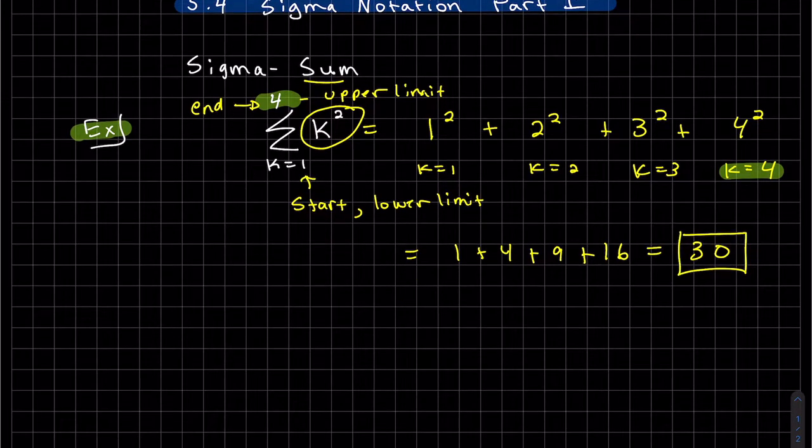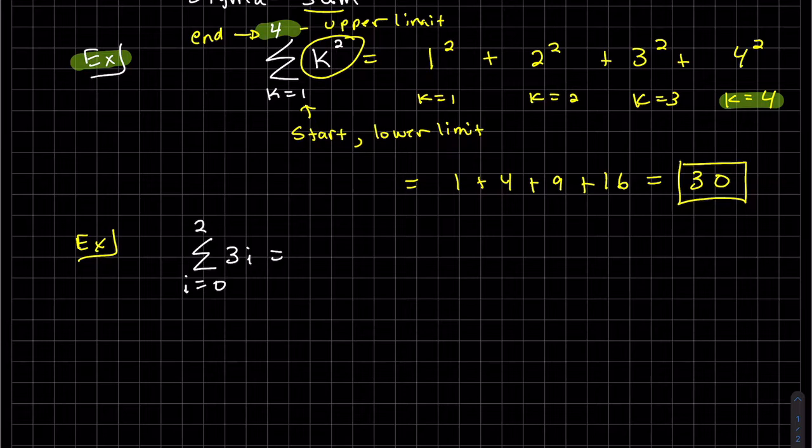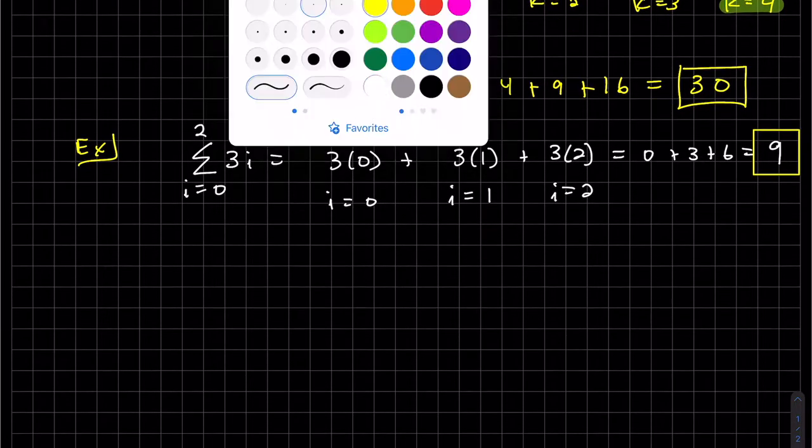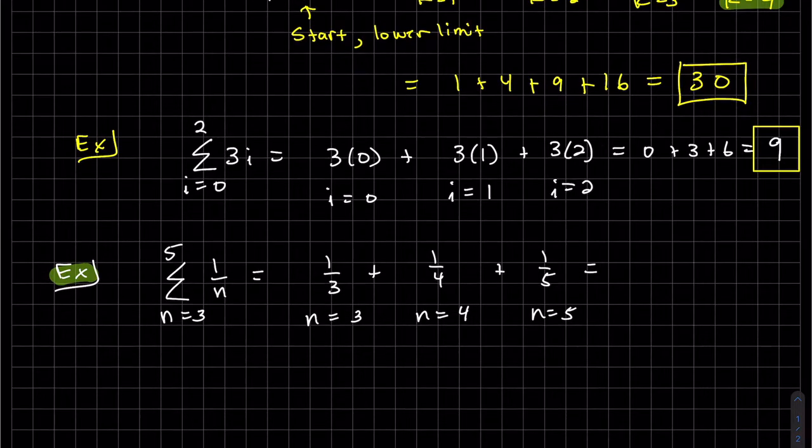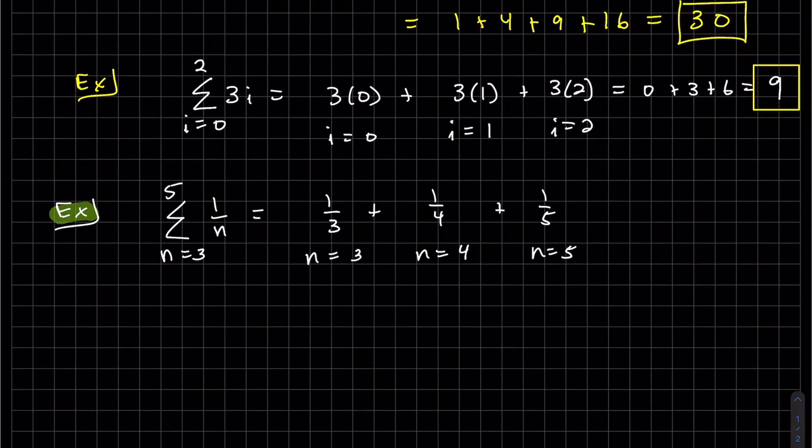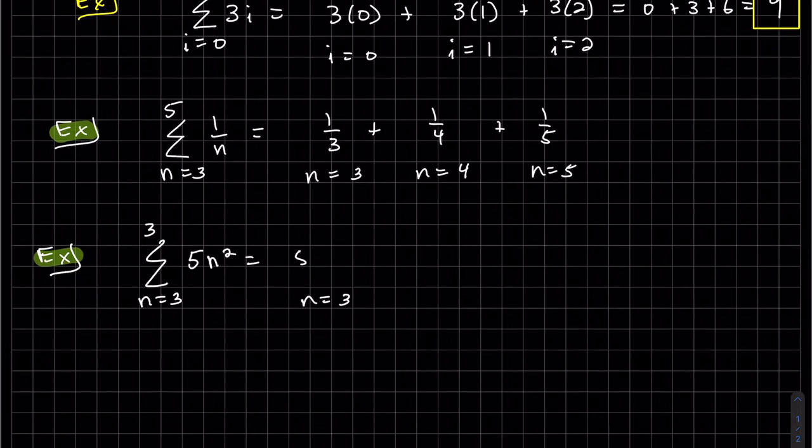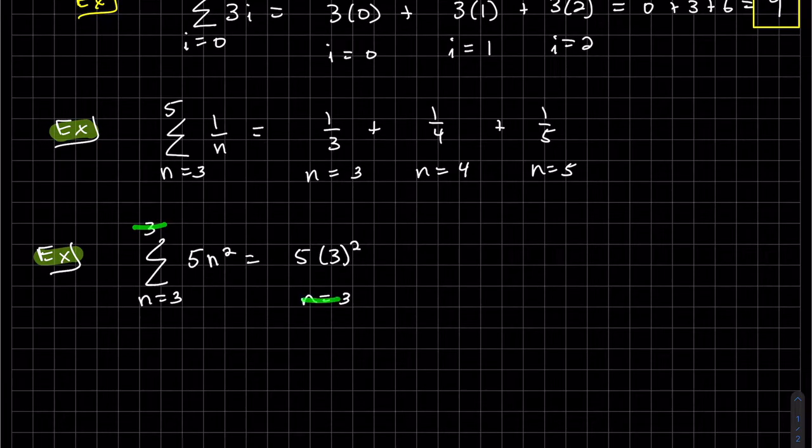So let's look at some other examples. So here our counter is i. So we start with the lower one i equals 0. So it's 3 times 0 and we get... and I'll just leave it that way. And here it starts at 3 ends at 3. So we're done. And if we want we can add it up.